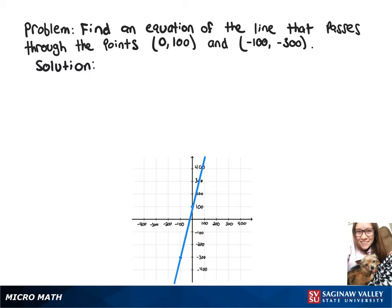To find an equation of the line that passes through these points, we need to start by finding the slope. So we'll do negative 300 minus 100 over negative 100 minus 0. And that gives us negative 400 over negative 100, or just 4.